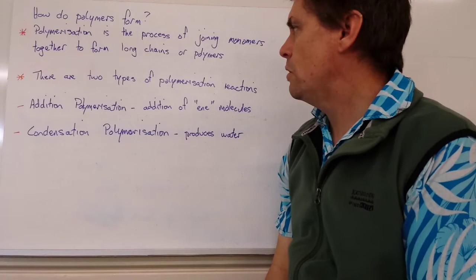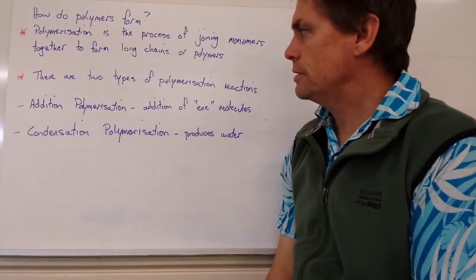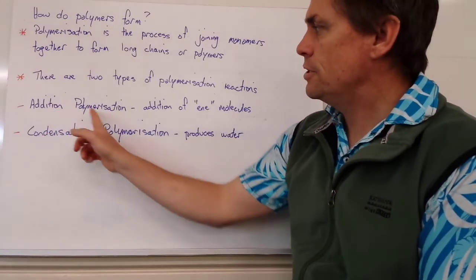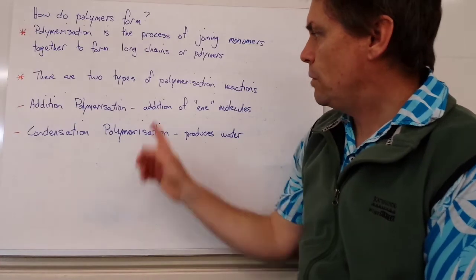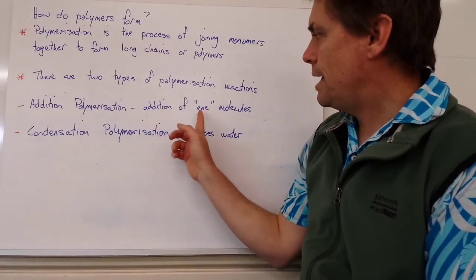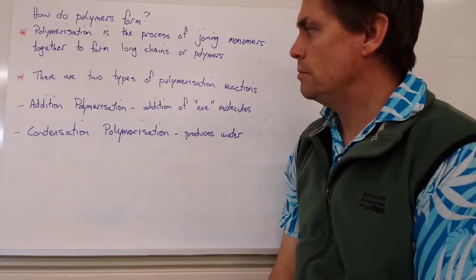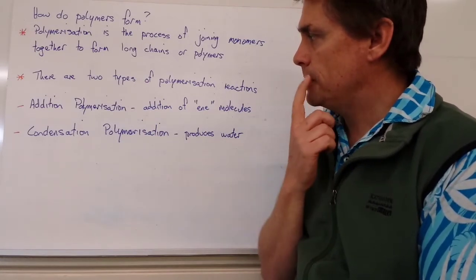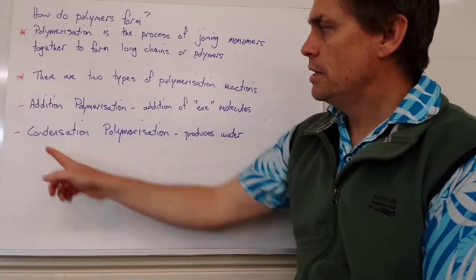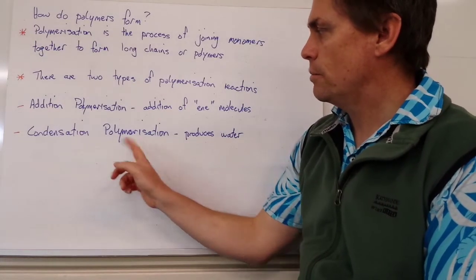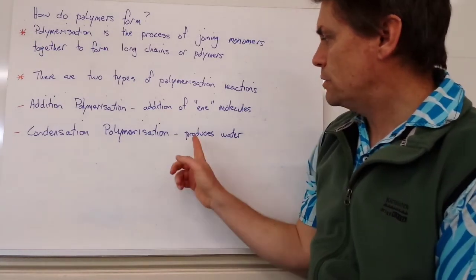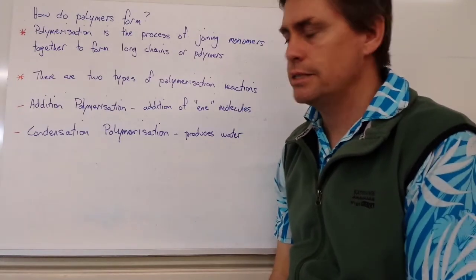Now there are two types of polymerization reactions. The first one is an addition polymerization, where we get the addition of alkenes or alkyne molecules to form much longer and larger molecules. And our second type of polymerization reaction is what we call a condensation polymerization reaction. And this one produces water as well as our polymer.